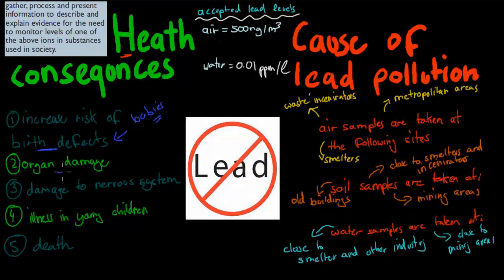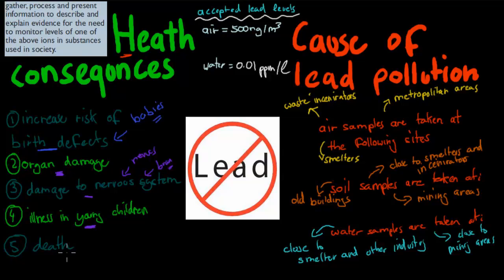You can also have organ damage if you have too much lead in your body — lead will actually attack your organs and tissues. Another problem is damage to the nervous system, such as your nerves and your brain. It can also cause illness in young children. And even a very small quantity of lead — what would be considered way too much for our bodies — can cause death. These are five possible health consequences from having too much lead in your body.